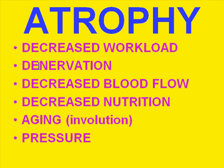If you denervate a muscle, it will atrophy on the basis of denervation — denervation atrophy. Any tissue, structure, or organ that gets decreased blood flow may atrophy and shrink due to the decreased size of the cells. Decreased nutrition would be another cause of atrophy. Aging is often involved with atrophy, particularly in endocrine glands — for example, a normal thyroid weighs 10 to 25 grams, but in elderly people that range might be 5 to 15 grams, because organs involute with aging. Sometimes mere pressure from a tumor or physical pressure can cause atrophy as well. These are the classic types of atrophy.